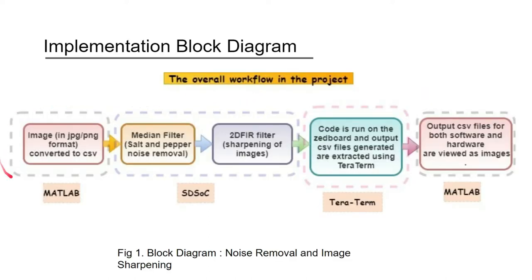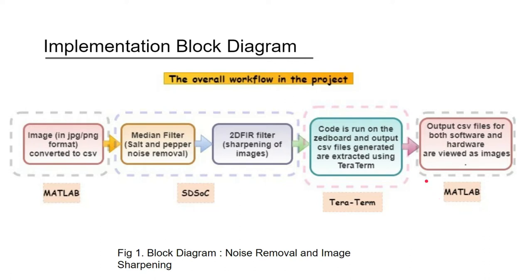The overall workflow: we used images in PNG and JPG format and converted them into CSV files with the help of MATLAB. In SDSoC, we wrote the median filter and 2D FIR filter code for both software and hardware implementation and built the program to run on the ZBoard hardware. We used Tera Term to load the generated CSV file onto the board and then fed that CSV file back to MATLAB. We generated CSV files for both software and hardware to see the difference between both images.